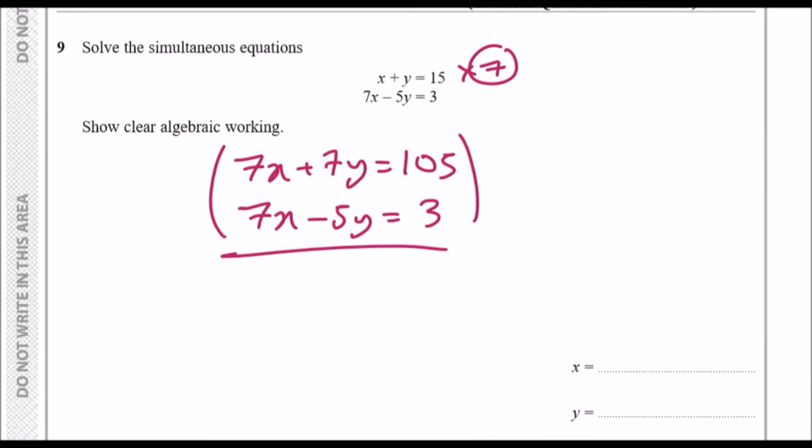All you want to do is subtract these pair of equations because the aim of simultaneous equations is to eliminate the common variables and only have a single variable left. Subtracting these, you should get 7x minus 7x is nothing. 7y minus negative 5y is 12y. 105 minus 3 is 102. To get y, divide by 12. 102 over 12 is 8.5 for y.